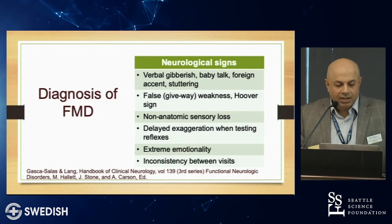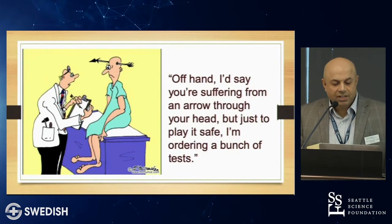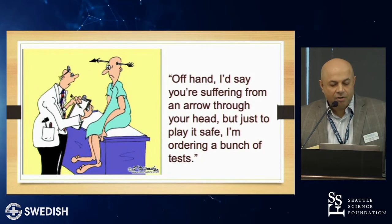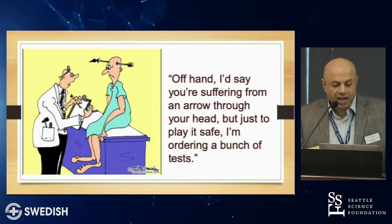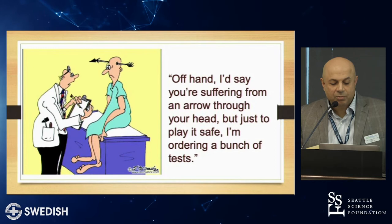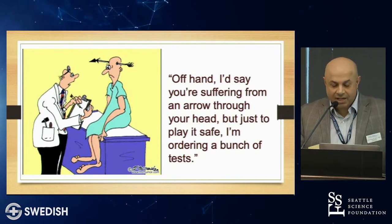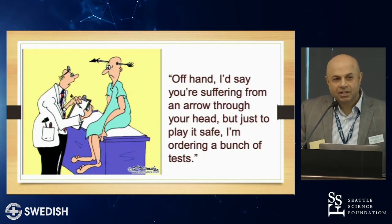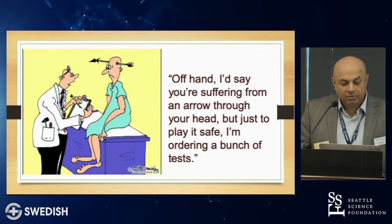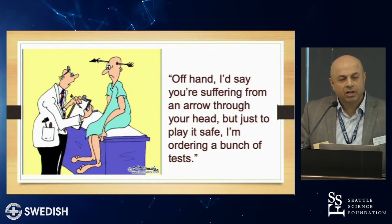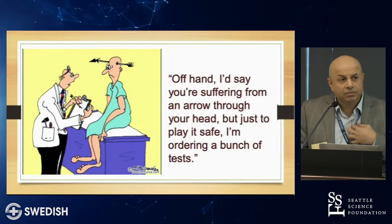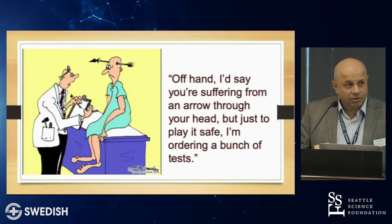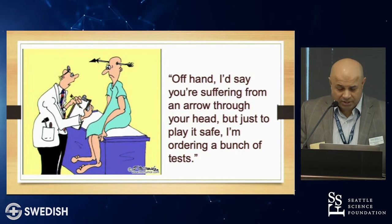What about testing? This cartoon tells us we don't need to order a whole bunch of tests. You try not to, though it's not always this clear. I also order tests because of dual diagnoses — there are other neurological conditions that can be present. For example, a 17-year-old with dystonia, tremor, and neuropsychiatric problems — you have to rule out Wilson's disease. At minimum, get a brain MRI.